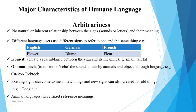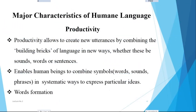Iconicity and onomatopoeia are also features within arbitrariness. In iconicity, we create a resemblance between the sign and its meaning — for example, words like 'small', 'tall', and 'fat'. In onomatopoeia, we mirror or echo the sound made by animals and objects through language, for example 'tick tock'. Existing sounds can also come to mean new things, and new signs can be created for older things — for example, 'Google it'. In contrast, animal language has fixed meaning and fixed reference.